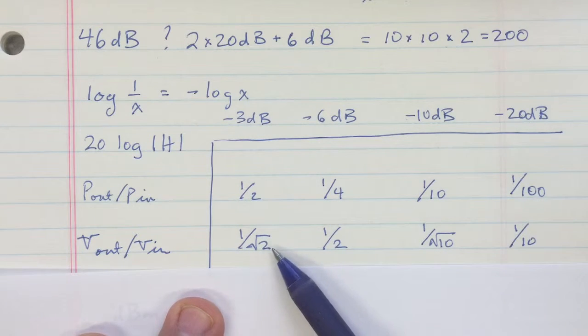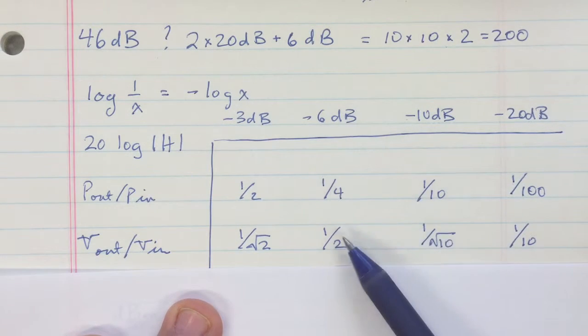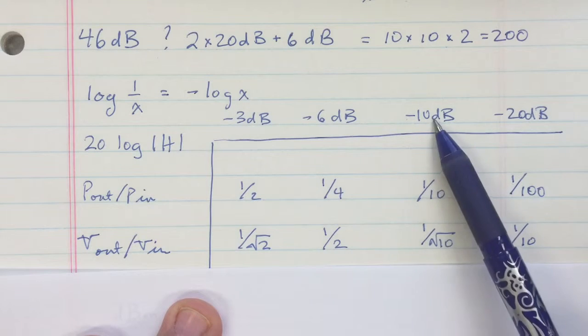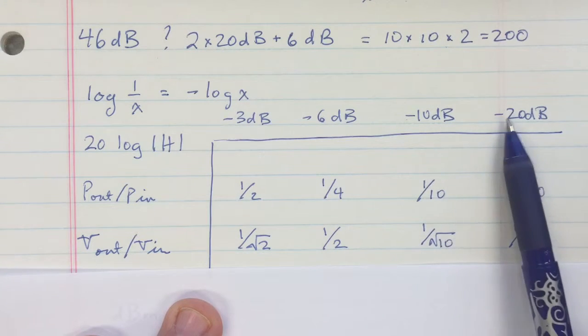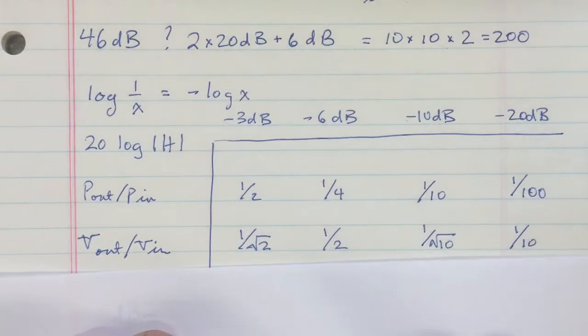So minus three dB is a power ratio of a half, or a voltage ratio of about 0.7. Minus six is a voltage ratio of about a half. Minus ten is a power ratio of one-tenth. And minus twenty is a voltage ratio of one-tenth.